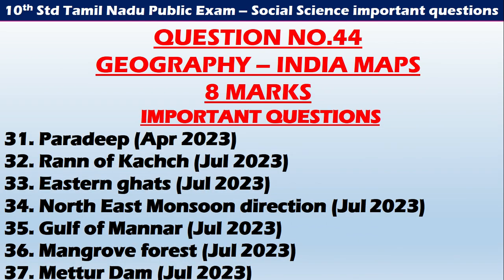Paradeep — April 2023. Rann of Kutch — 2023. Eastern Ghats — 2023. Northeast Monsoon Direction — July 2023. Gulf of Mannar — July 2023. Mangrove Forest — July 2023. Metro — July 2023. So all put together, there are around 37 questions in Geography India maps for the 8-mark questions, my dear children.